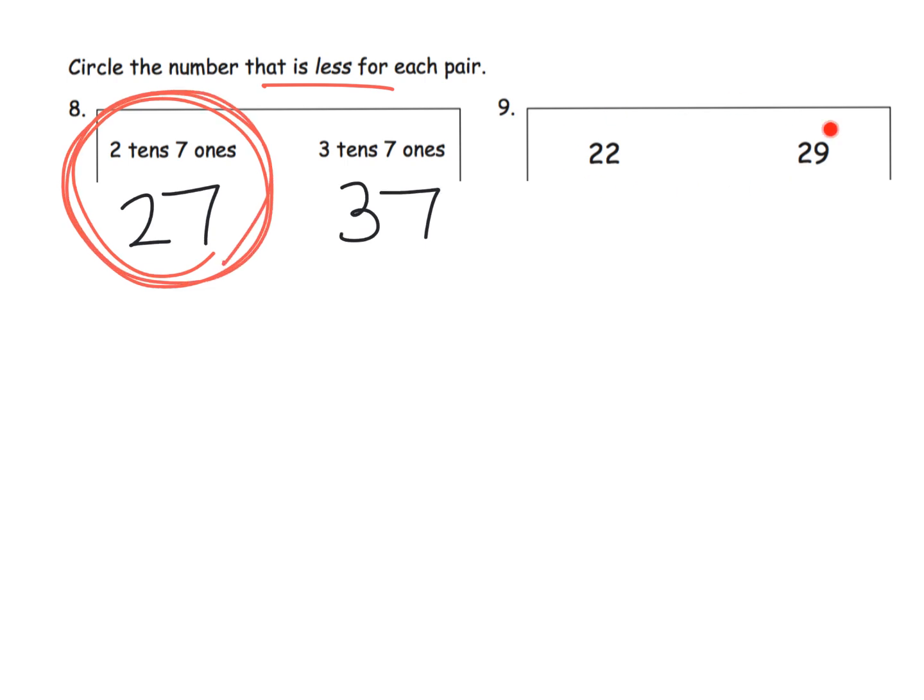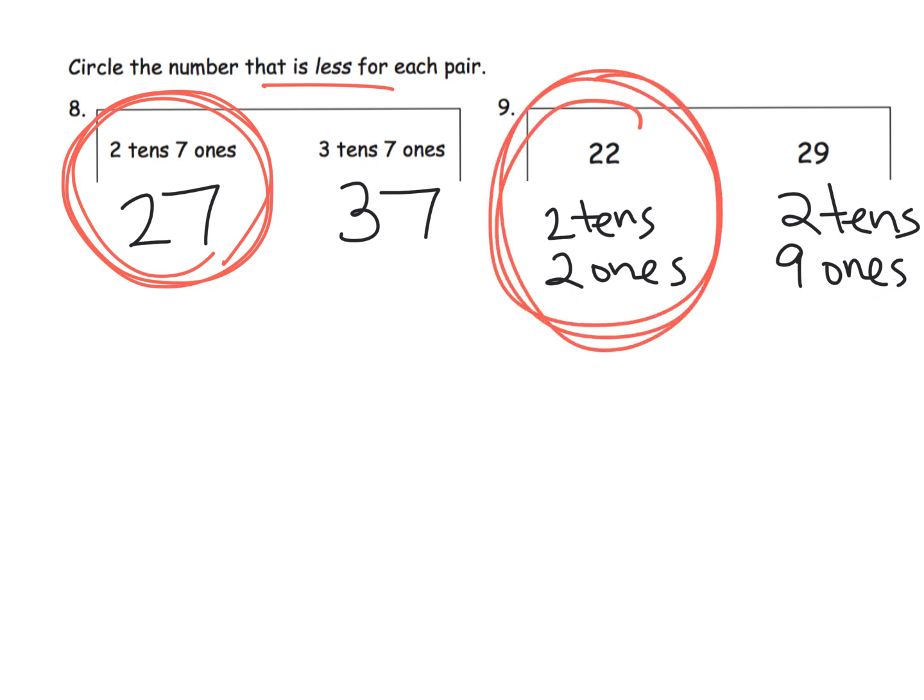And over here, the thing I want to call out to your attention is for the first time, we have a tie when it comes to our tens place. Because this is two tens and two ones, and this is two tens and nine ones. So which one is less? Well, they have the same number of tens. It's the ones place that is the tiebreaker, so to speak. So 22 is less than 29. So that's a tricky one, perhaps for our first graders.